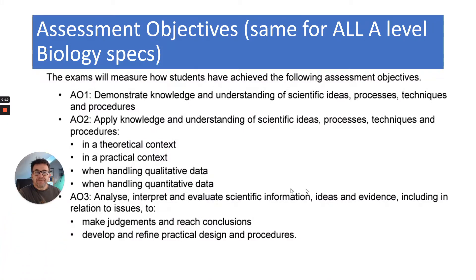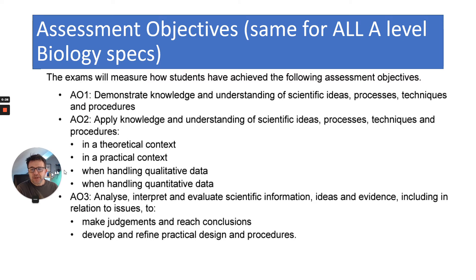The first thing I'm going to talk about before I talk about the different papers are the assessment objectives. The assessment objectives are really important. They're the same for all A-level biology specs, and they're split into AO1, AO2 and AO3. You're going to be examined on different proportions of these assessment objectives in each paper.